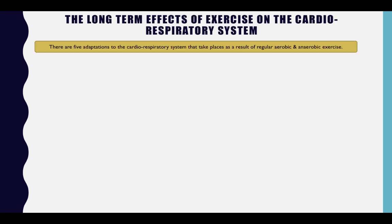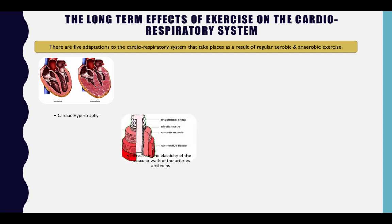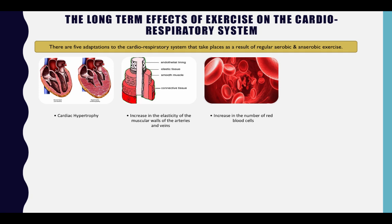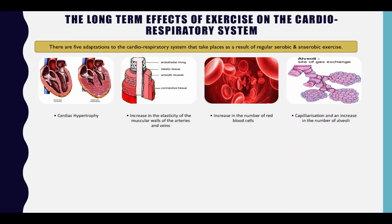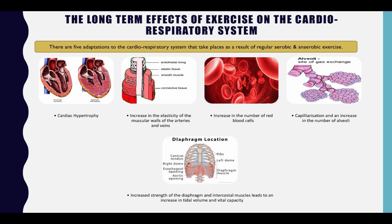There are five adaptations of the cardiorespiratory system that take place as a result of regular aerobic and anaerobic exercise: cardiac hypertrophy; increased elasticity of the muscular walls of the arteries and veins; an increase in the number of red blood cells; capillarization and an increase in the number of alveoli; and increased strength of the diaphragm and intercostal muscles, leading to an increase in tidal volume and vital capacity.